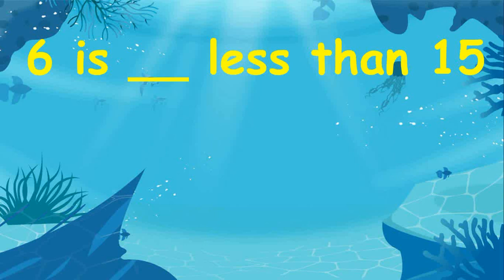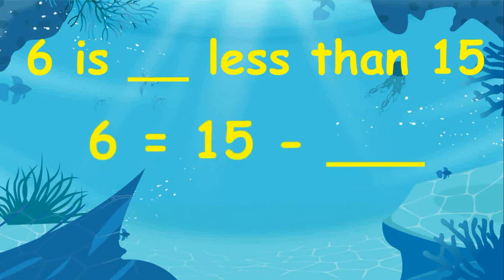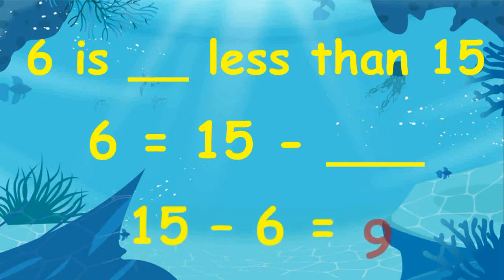To find the missing number in '6 is blank less than 15,' change the equation first: 'is' means equals, and 'less than 15' means 15 minus. Then subtract: 15 minus 6 equals 9. Therefore, 6 is 9 less than 15.